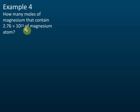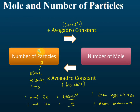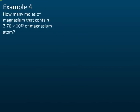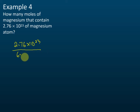Now they give you the number of atoms and want you to find the number of moles. If they give you the number of particles and you want the number of moles, divide by Avogadro's constant. So we take 2.76 × 10²³ and divide by 6.02 × 10²³, which gives 4.458 moles.